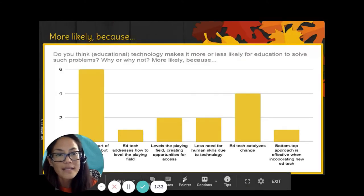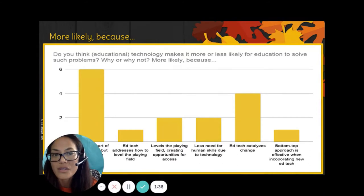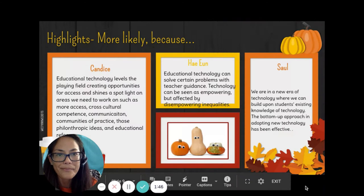As for more likely, the most reoccurring theme included that educational technology is part of the solution, but not the sole solution to solve societal problems, and that educational technology is the catalyst for change. Here are highlights from those who chose more likely.